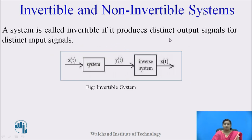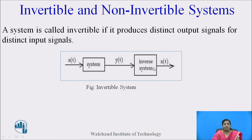Invertible and non-invertible systems: a system is called invertible if it produces distinct output signals for distinct input signals. In case of an invertible system, the input x(t) is recovered at the output of the system. So if x(t) is the input to the first system and the output is y(t), then applying y(t) to a second system gives back x(t). Such systems are called invertible systems.